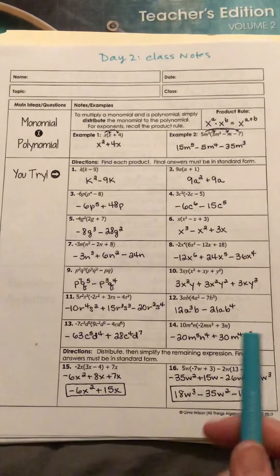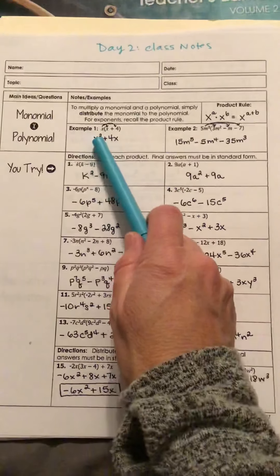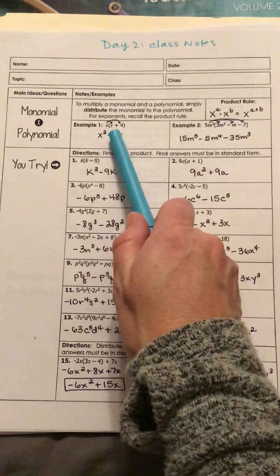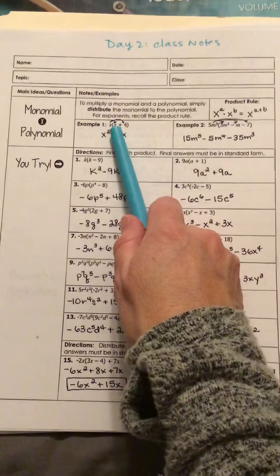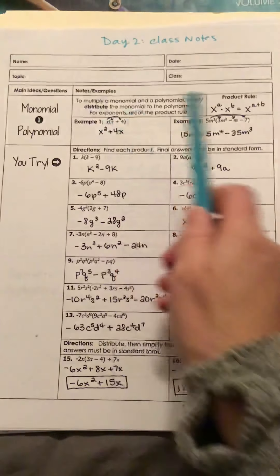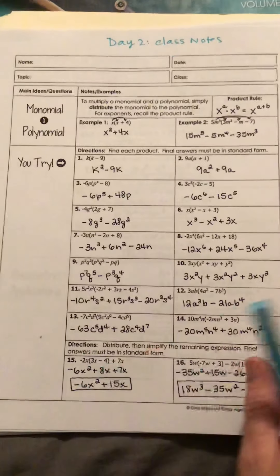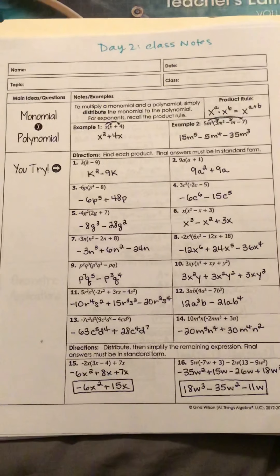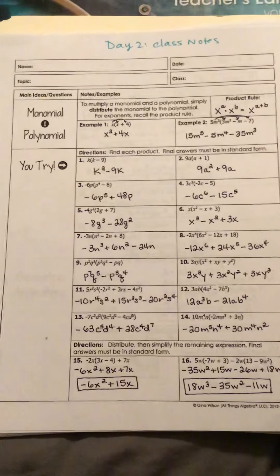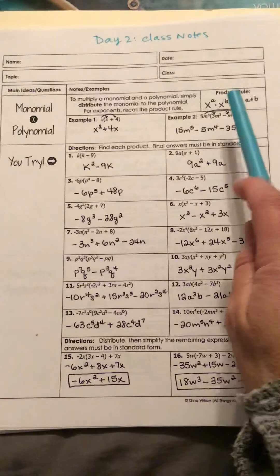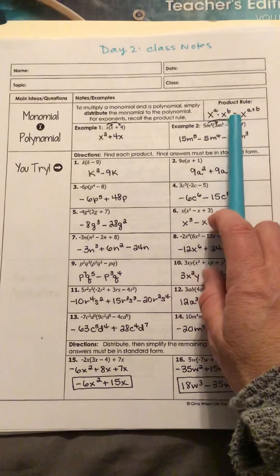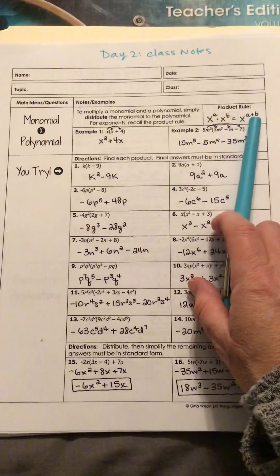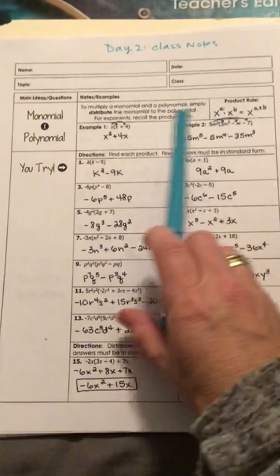Remember, a monomial is one term. In my first example, outside the parentheses I have an X, and inside I have a binomial — more than one term in the parentheses. If you have exponents inside or outside the parentheses, don't forget the product rule listed up here: if I have x to the a times x to the b, the product rule tells me I can simply add those exponents.